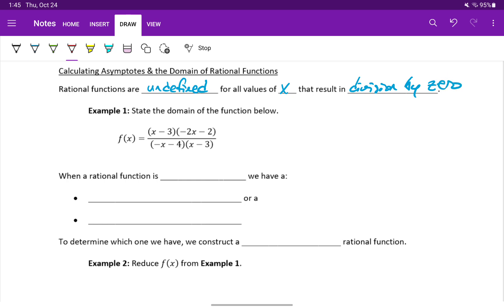That means our starting point is to determine where our denominator would be equal to zero and identify restricted values. In this case, that would tell us that x cannot equal negative four or positive three. The two results that we get by setting those factors in the denominator equal to zero and solving.